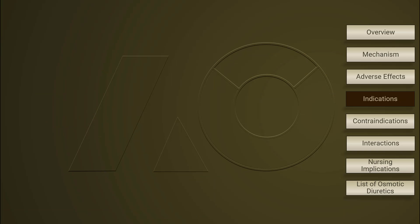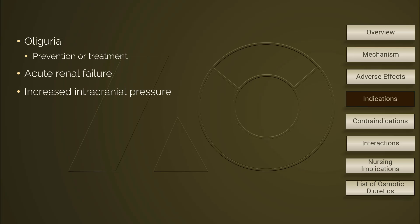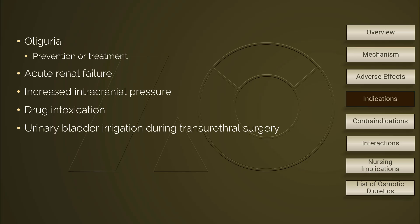Osmotic diuretics are indicated for oliguria, for both prevention and treatment; acute renal failure; increased intracranial pressure associated with cerebral edema; drug intoxication; and urinary bladder irrigation.